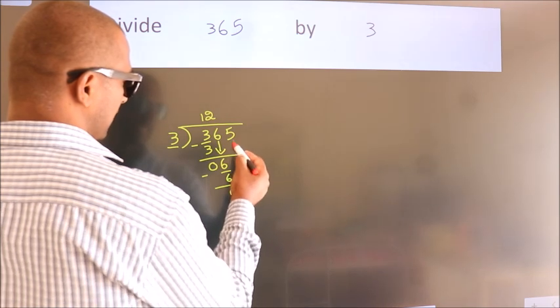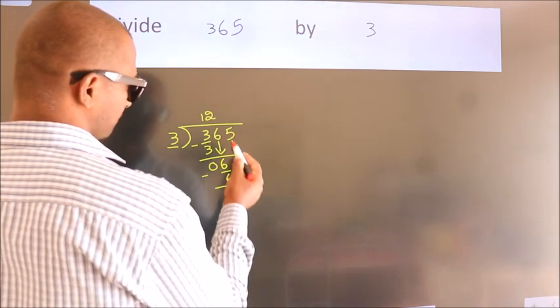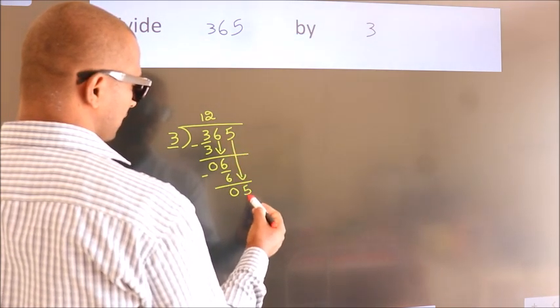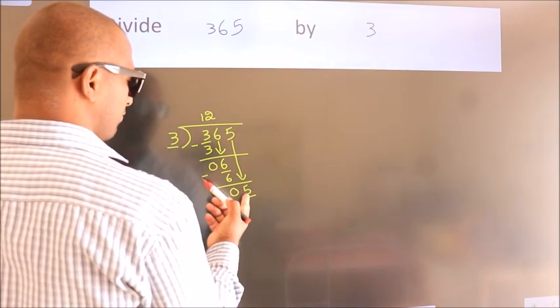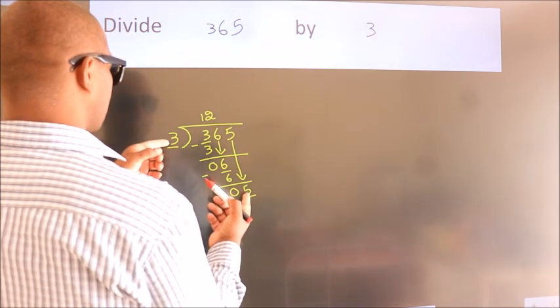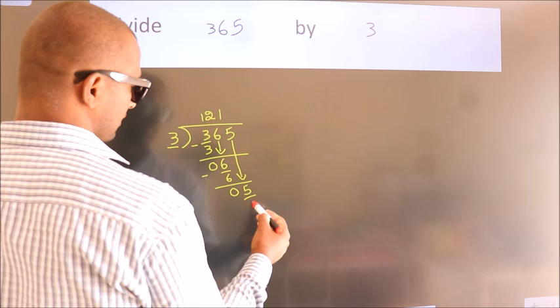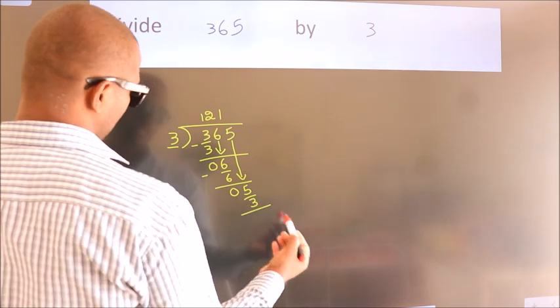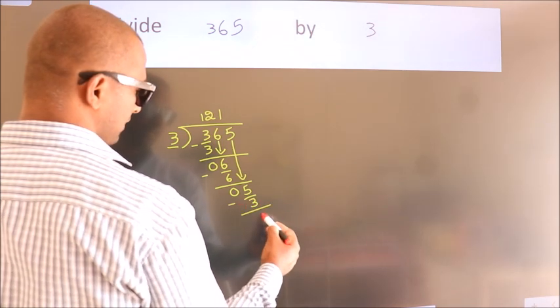After this, bring down the beside number. So, 5 down. A number close to 5 in 3 table is 3 ones 3. Now, we subtract. We get 2.